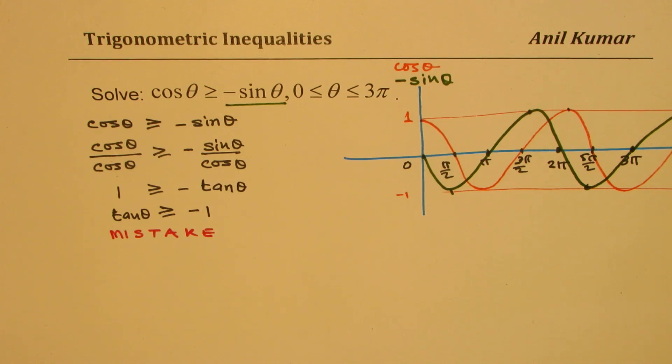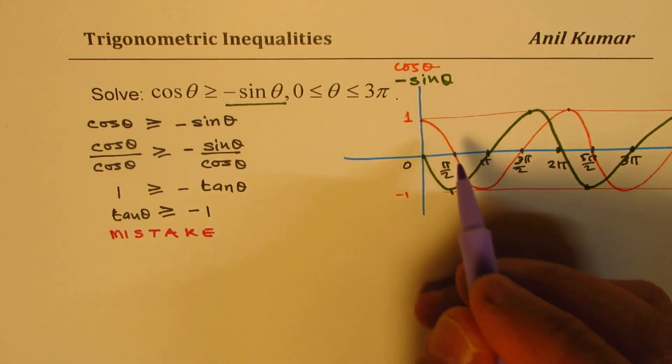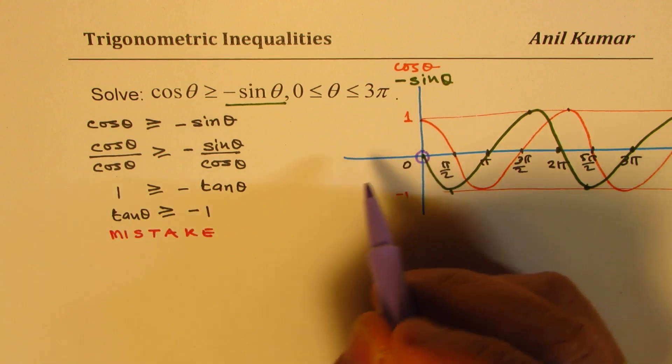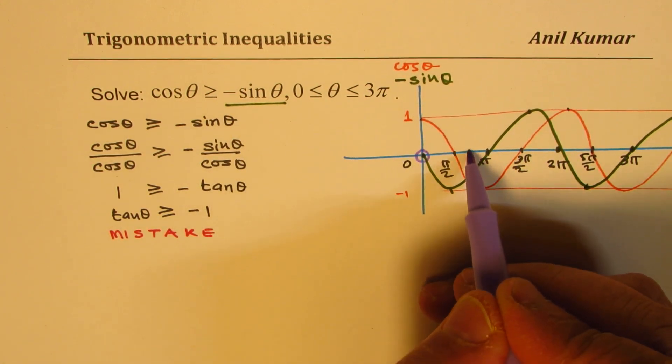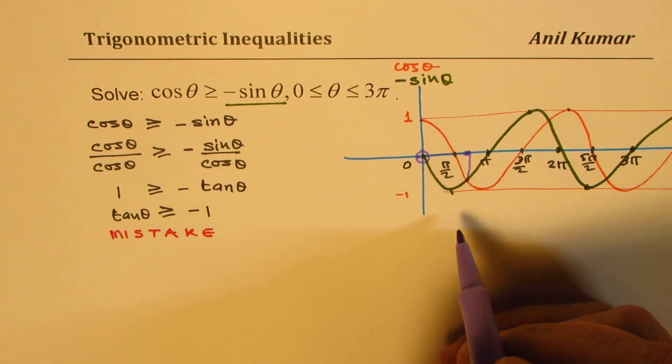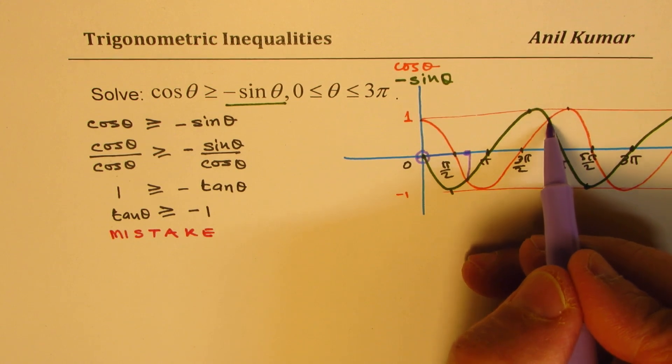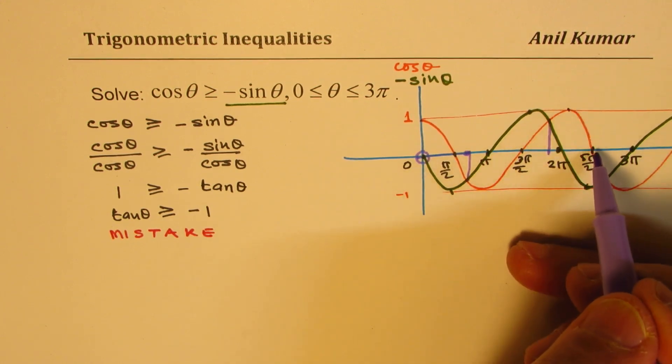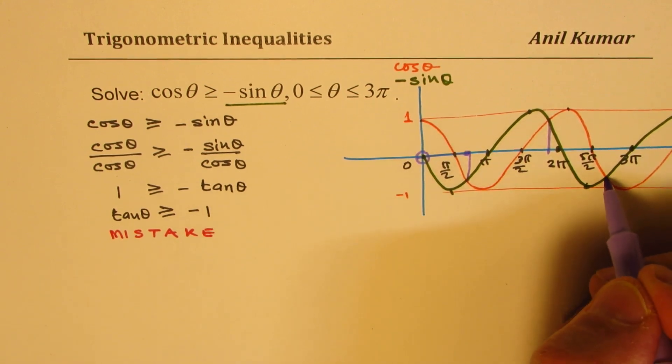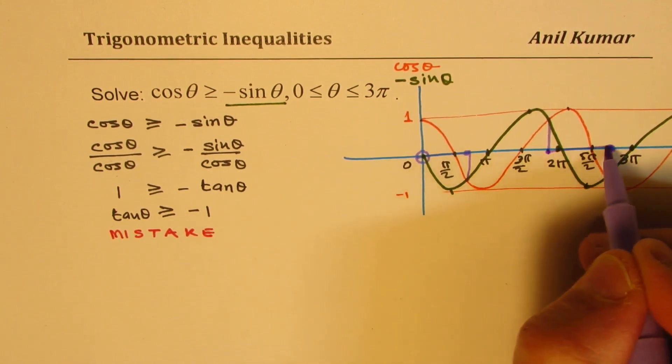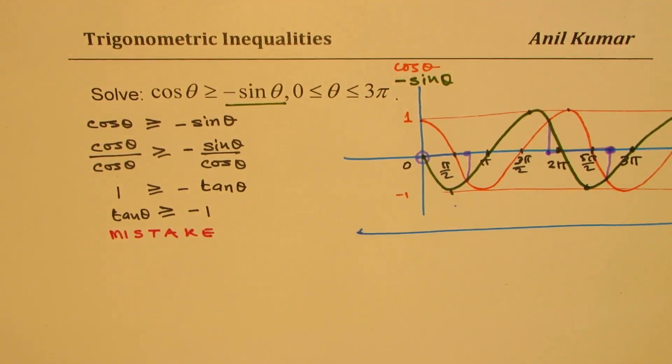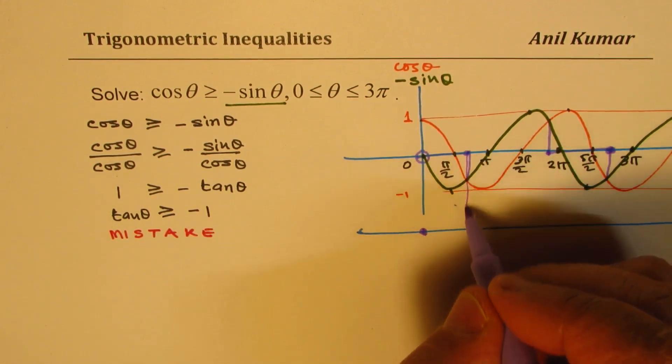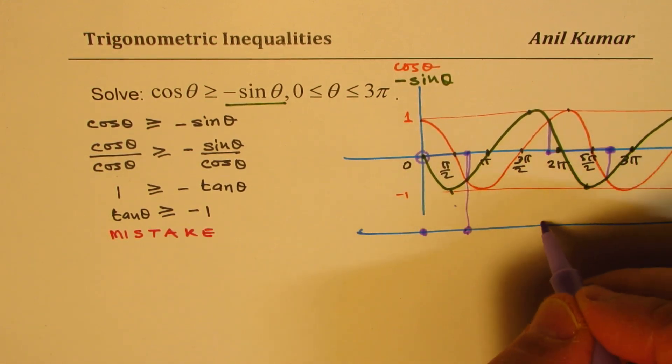From these two graphs, we could actually conclude the solution very easily. Within this interval, we know the answer is from this point, which is included, when the orange is positive up to this point. That is one solution. The other one is from this point, it goes above green line to this point. These are the solution sets.